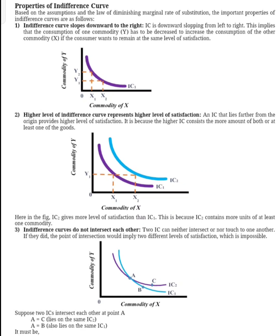The indifference curve is downward sloping from left to right. This implies that consumption of one commodity has to be decreased to increase the consumption of the other commodity, if the consumer wants to remain at the same level of satisfaction. This is the first property.